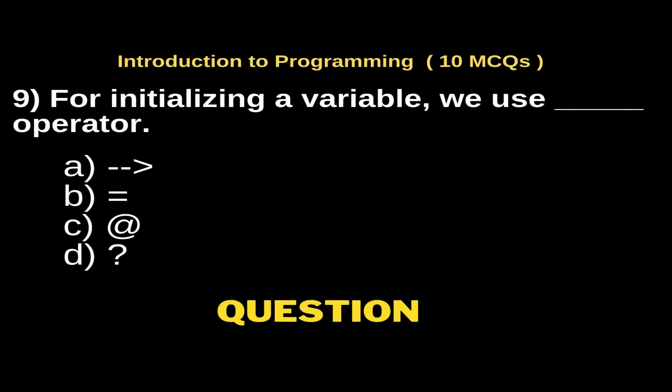For initializing a variable, we use dash operator. Options: Option A, arrow; Option B, equals to. In computer programming, equals to is abbreviated as assignment operator. Option C, at the rate of sign; Option D, question mark. And the right answer is Option B, equals to, which means assignment operator.